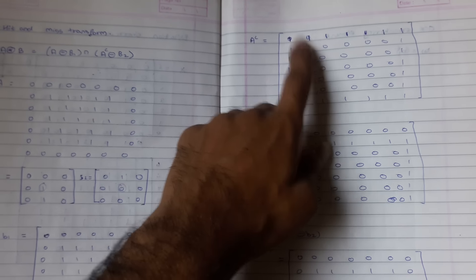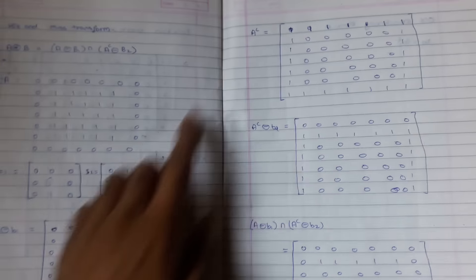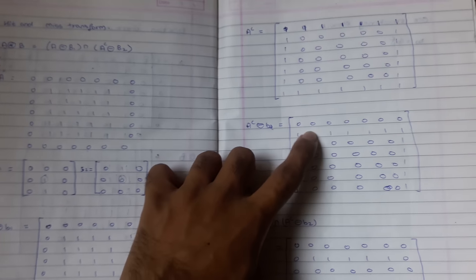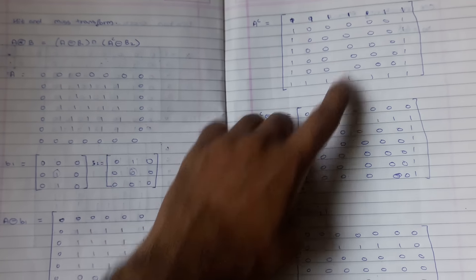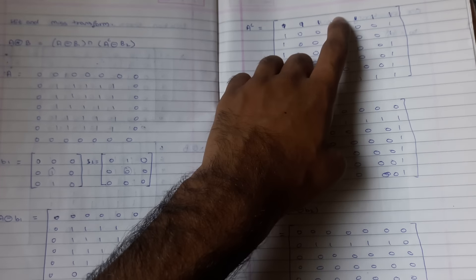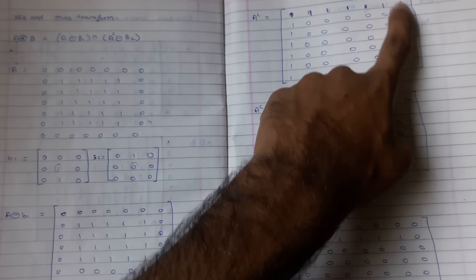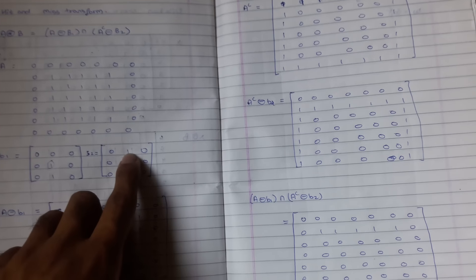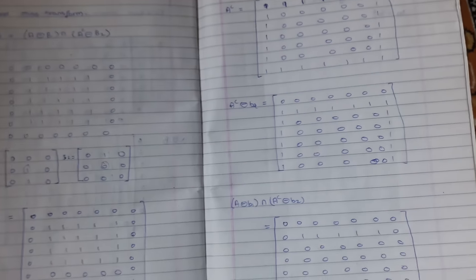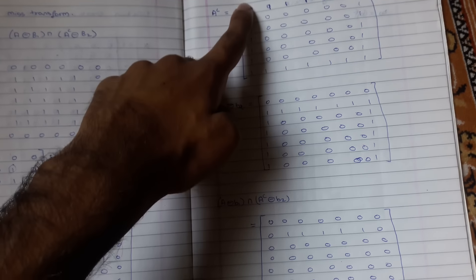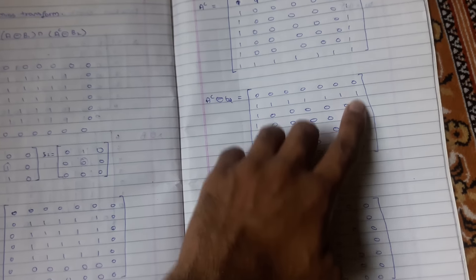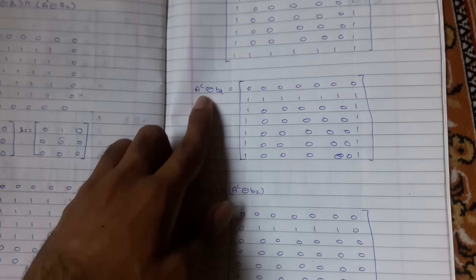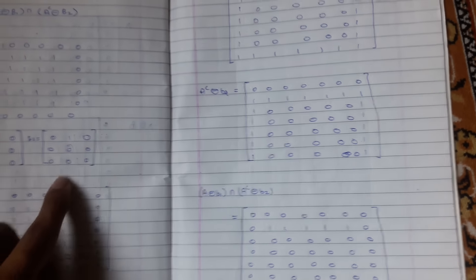Applying this: when the seed point is placed at a position and there is a 1 above it in the complement of A, the output is 1. Working through the positions, we find a row of 1s where the condition holds. This gives us the result of complement of A eroded with B2.